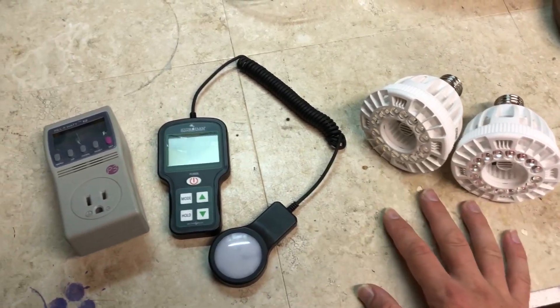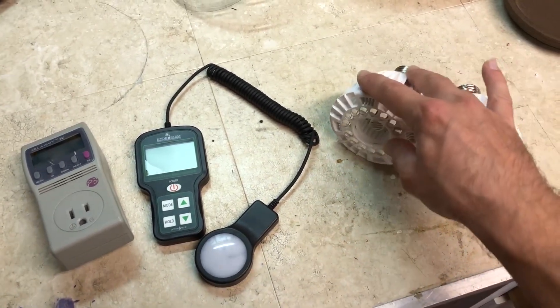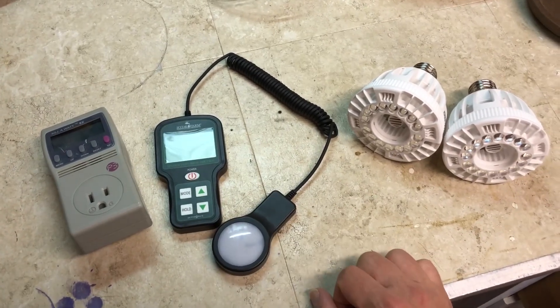So now what we're going to do is put these in a light holder, and we're going to use the PAR meter to test the difference at the same height.